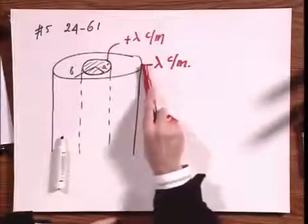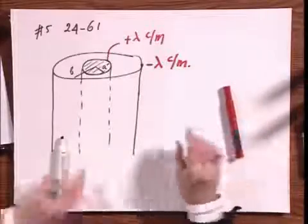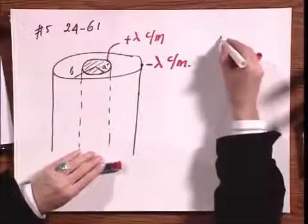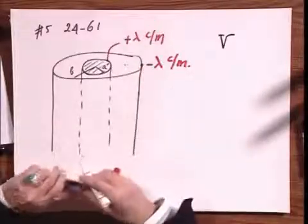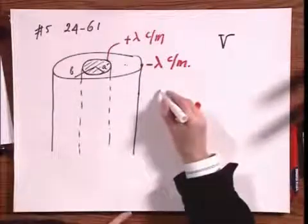Because we have here the same amount, plus per meter, as we have here, minus per meter. And you're being asked what is the potential anywhere in space, here, here, and there. The trick always is as follows.